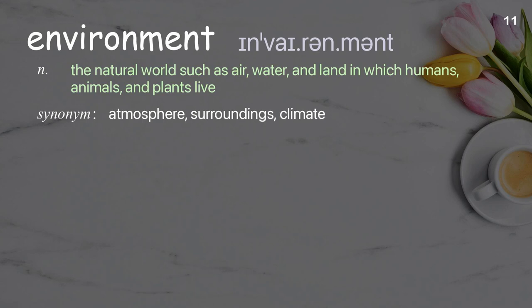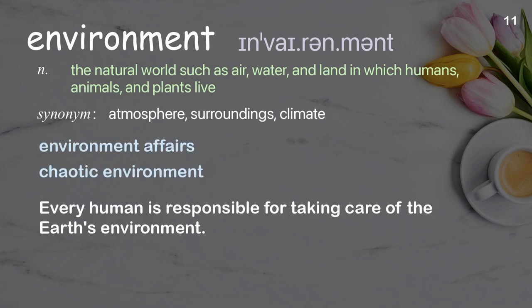Environment: the natural world such as air, water, and land in which humans, animals, and plants live. Examples: environment affairs, chaotic environment. Every human is responsible for taking care of the Earth's environment.